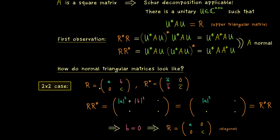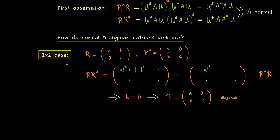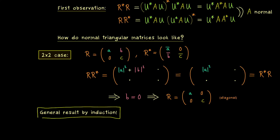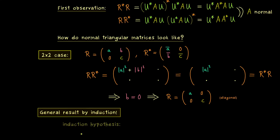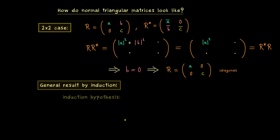So the Spectral Theorem for 2×2 matrices is already proven: in the 2×2 case, normal upper triangular matrices are necessarily diagonal. At this point it should not surprise you that we get the general result by induction. The induction hypothesis is that an n×n upper triangular matrix which is also normal is necessarily diagonal.